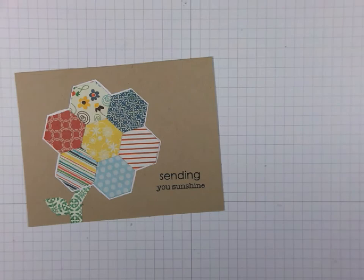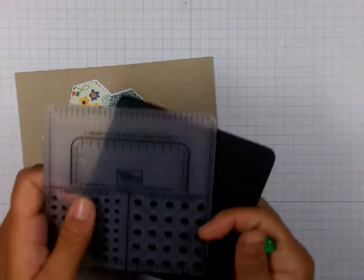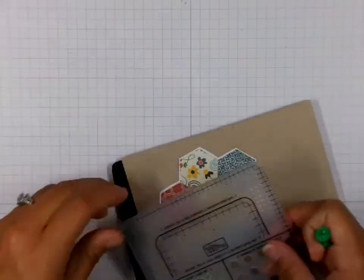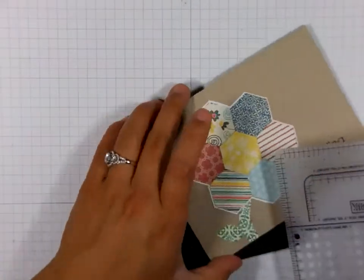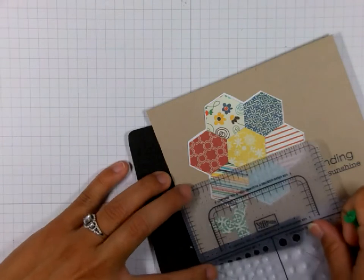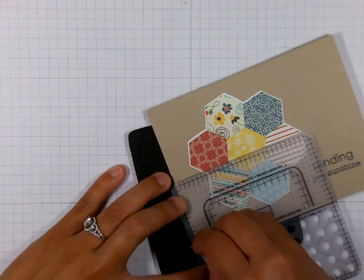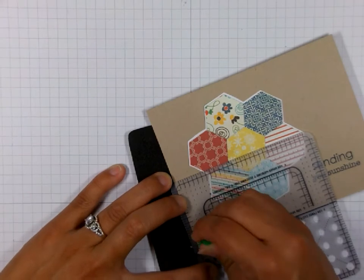Now I'm going to take an oldie but goodie, my paper piercing mat from Stampin' Up and my trusty little push pin. I'm piercing holes all the way around the perimeter of this cardstock to give it that handmade touch and feel to go along with that quilt look.